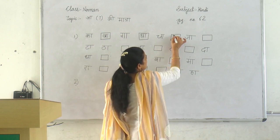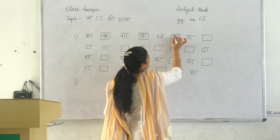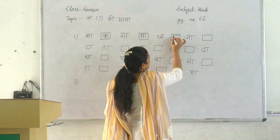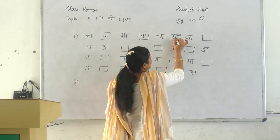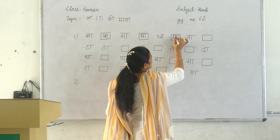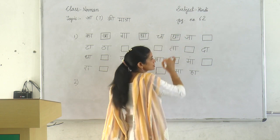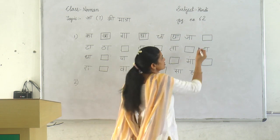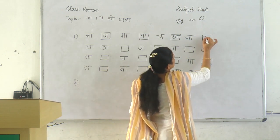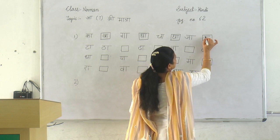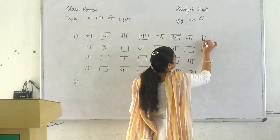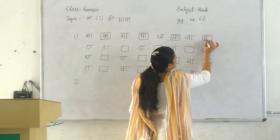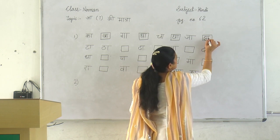Next line start now. Chha a cha. Then chha a cha. Jha a ja. And what comes after jha? Jha. Jha a ja.